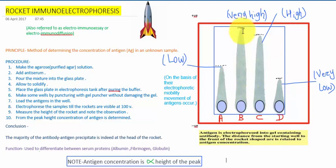So the conclusion is the majority of the antigen-antibody precipitate is indeed at the head of the rocket. As I have discussed, you can see the precipitate in the head of the rocket. The function of rocket immunoelectrophoresis is it is used to differentiate between serum proteins, that is albumin, fibrinogen, and globulin.